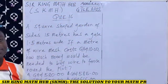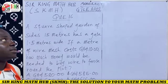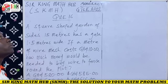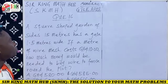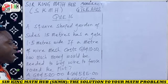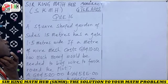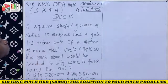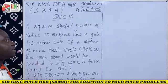Hello everyone, welcome to my channel Second Math Hub, the solution to your math problems. This is a Ghana Teacher Licensure Sanctuary Exam, year 2022, subject area numeracy, question number 16. A square-shaped garden of sides 15 meters has a gate 1.5 meters wide. If a meter of wire mesh costs 10 Ghana cedis, how much money will be needed to buy wire to fence around the plot? Clearly, this question is under perimeter.